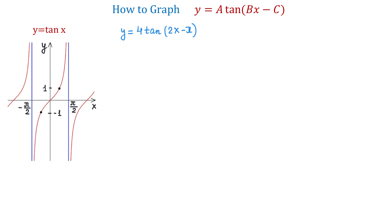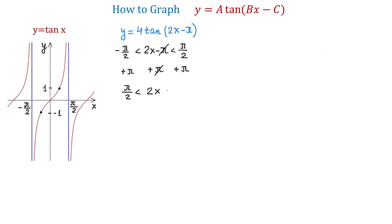To find the new asymptotes, we will write the inequality 2x minus pi is greater than negative pi over 2 and less than positive pi over 2. From here we will add pi to all three parts. Then to the left, pi minus pi over 2 is pi over 2. So we will have pi over 2 less than 2x less than pi plus pi over 2, which is 3 pi over 2. Now to get x alone, we divide all three parts by 2. Pi over 2 divided by 2 equals pi over 4.